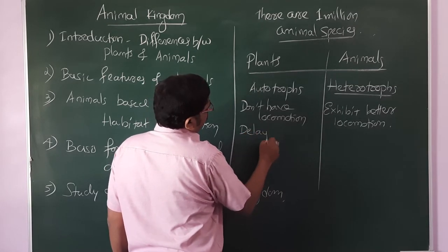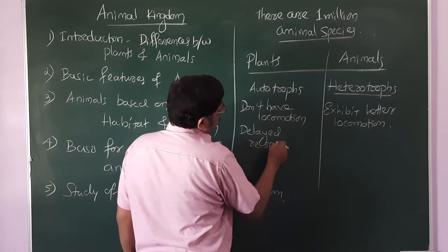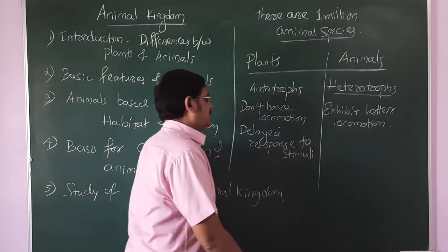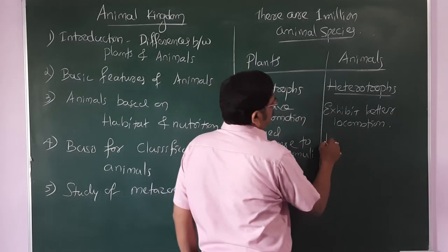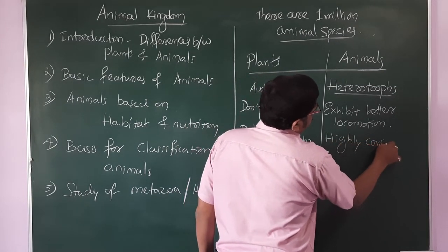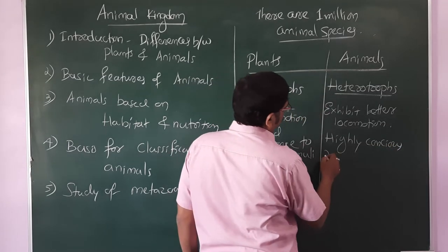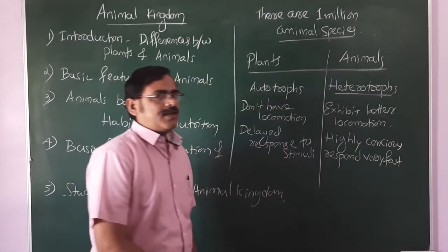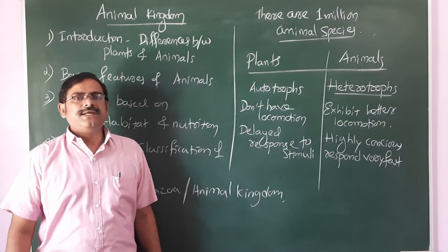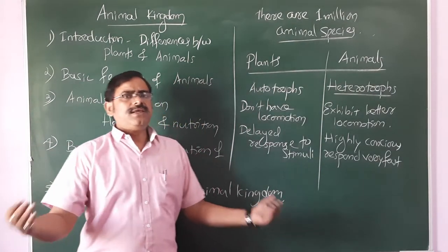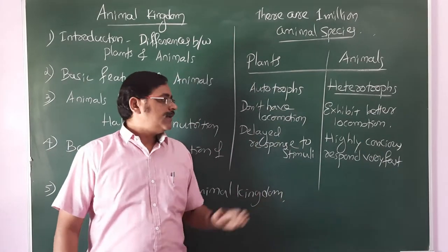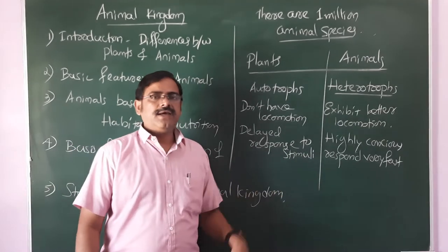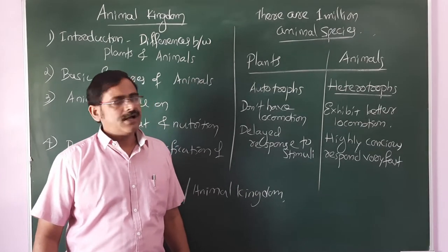Another difference: plants have a delayed response to stimuli, whereas animals are highly conscious and respond very fast to different stimulations — it may be vibration, sound, temperature, touch, or smell. Animals respond very well and better than plants to a variety of stimulations.